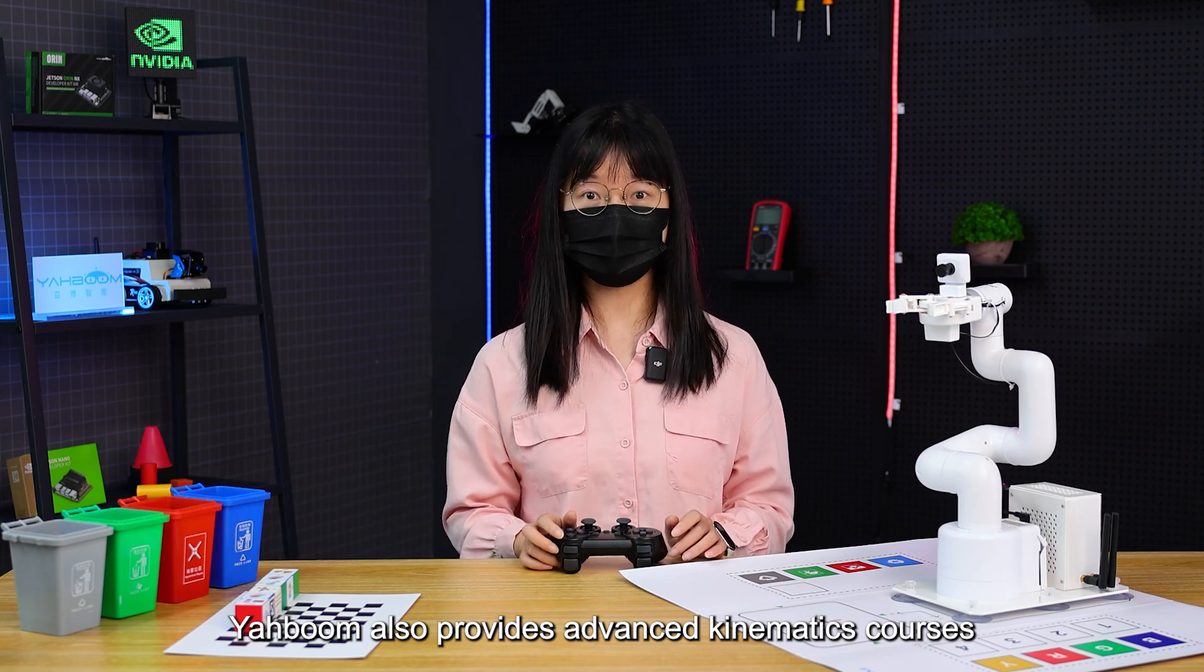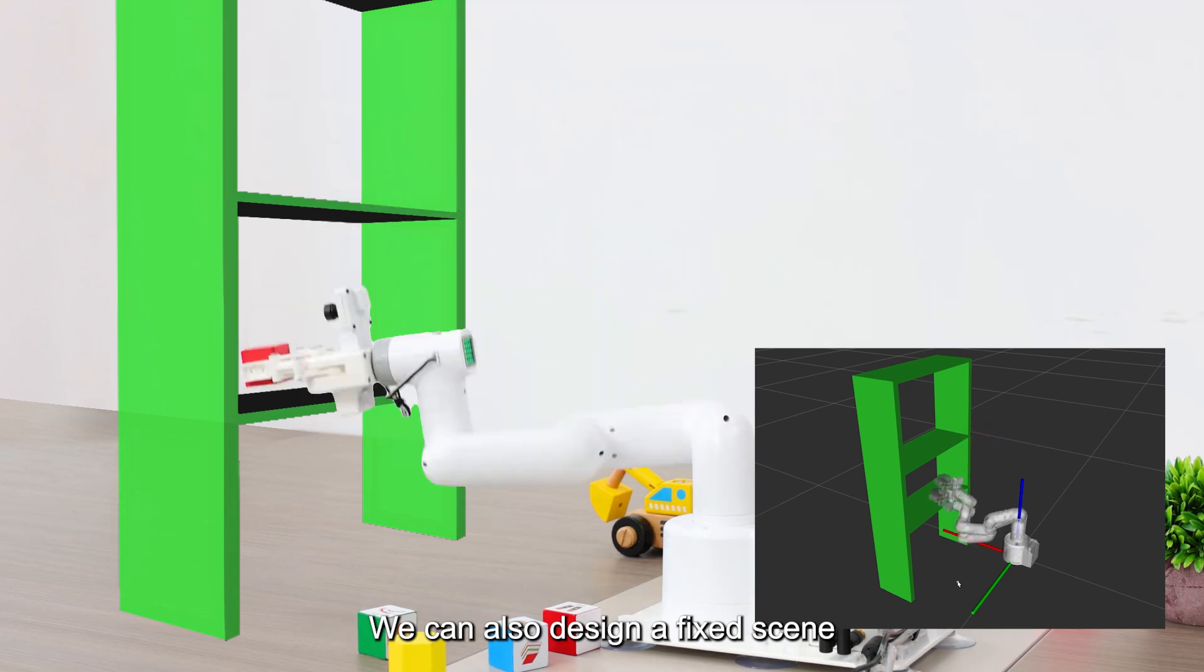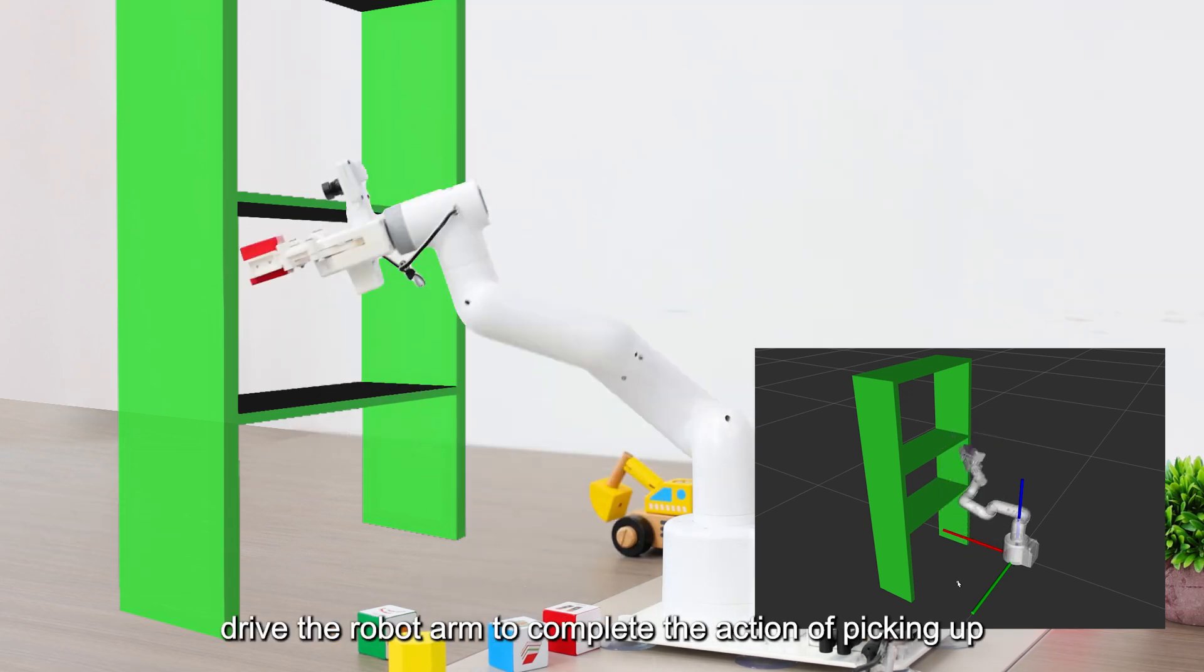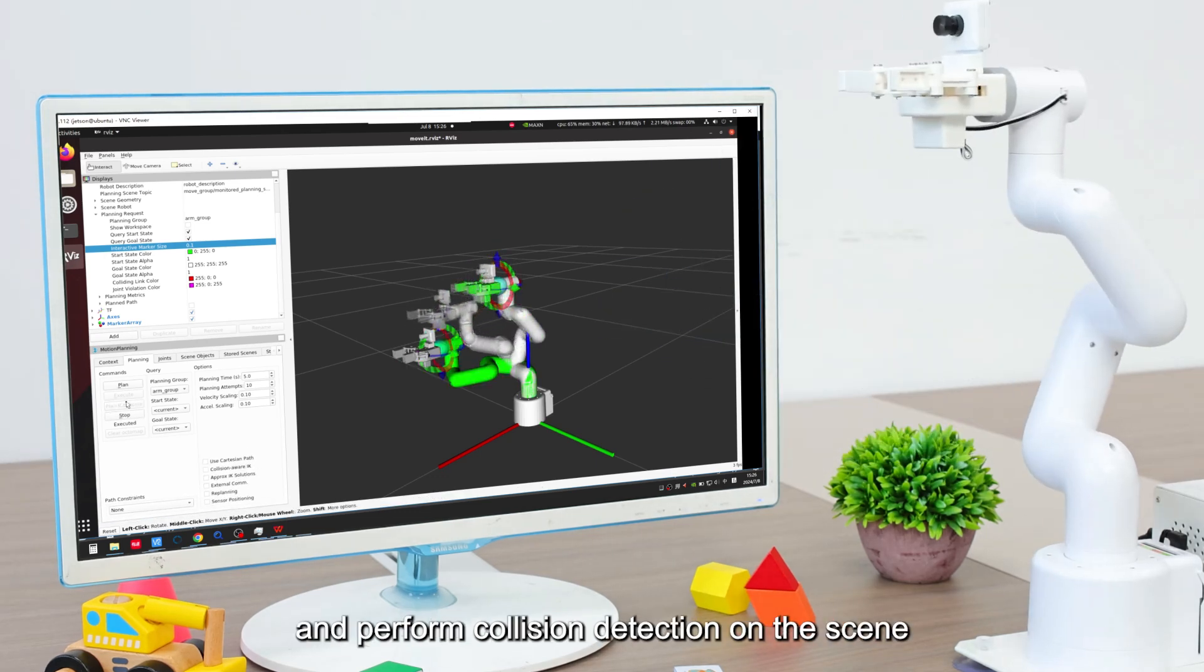The manufacturer also provides advanced kinematics courses which can create obstacles in the simulation interface and drive JetCobot to avoid obstacles while moving. We can also design a fixed scene, drive the robot arm to complete the action of picking up and placing objects in the scene, and perform collision detection on the scene.